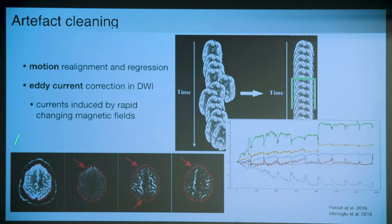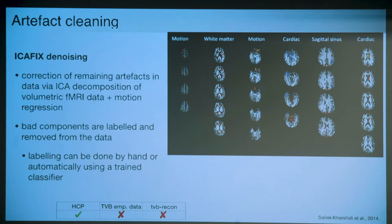Another factor is eddy currents: due to fast switching of the magnetic fields, electric currents can be induced which themselves cause distortions. FSL has a nice toolbox to correct for these distortions. The HCP pipeline does this correction; the other two pipelines don't yet.